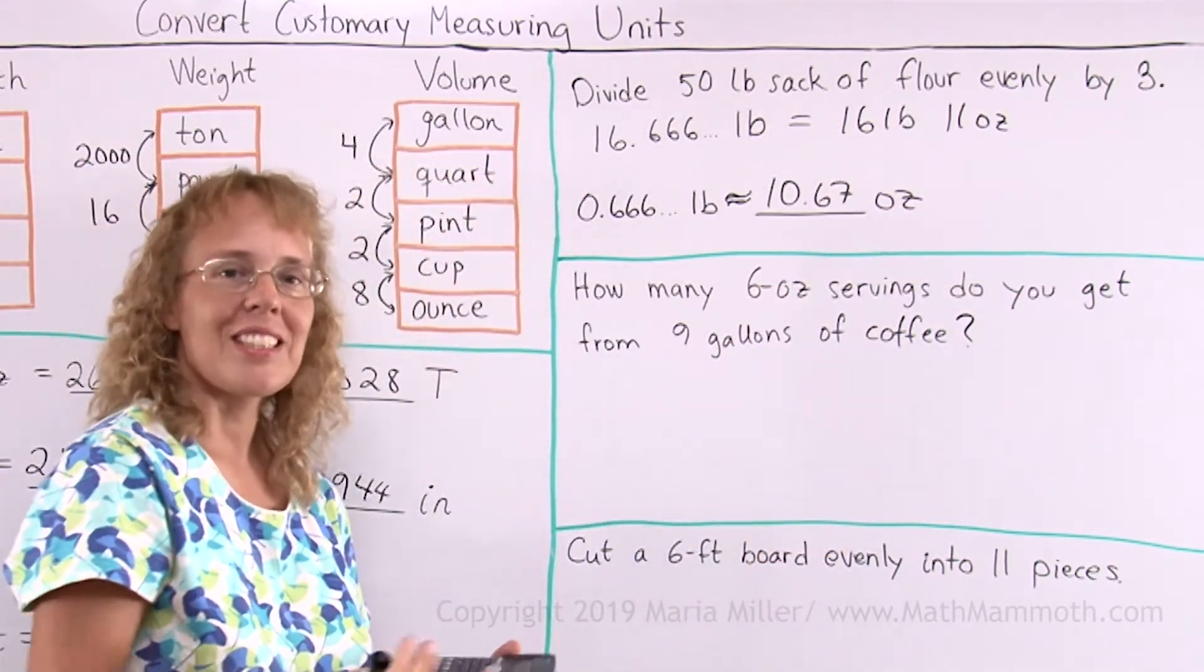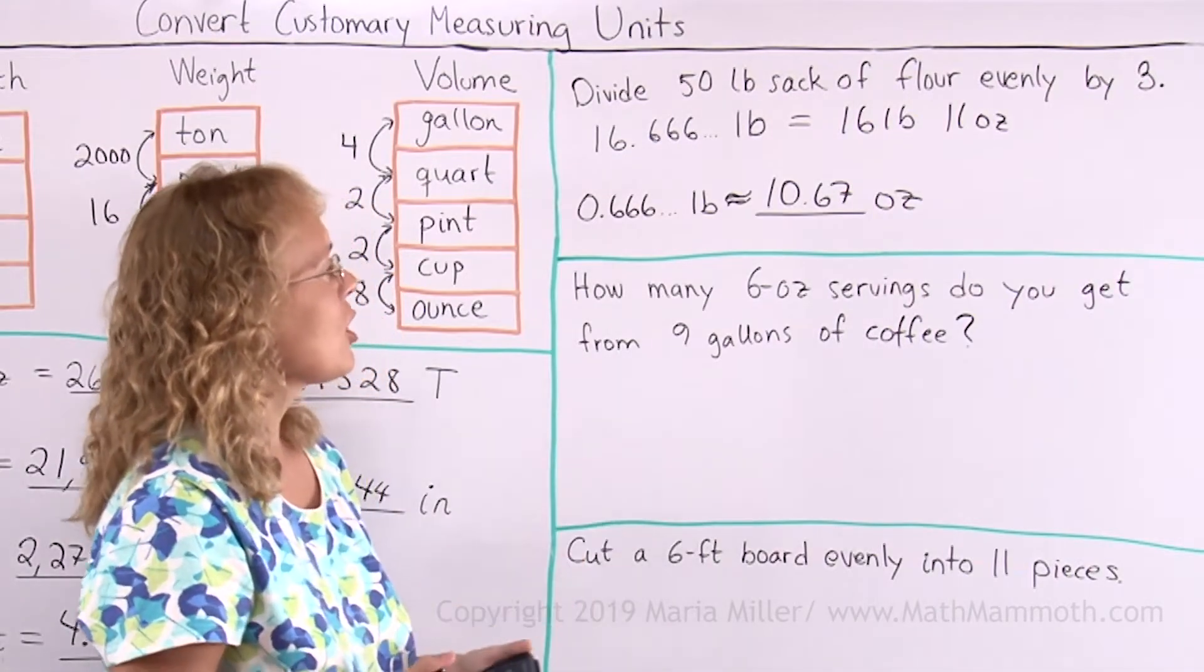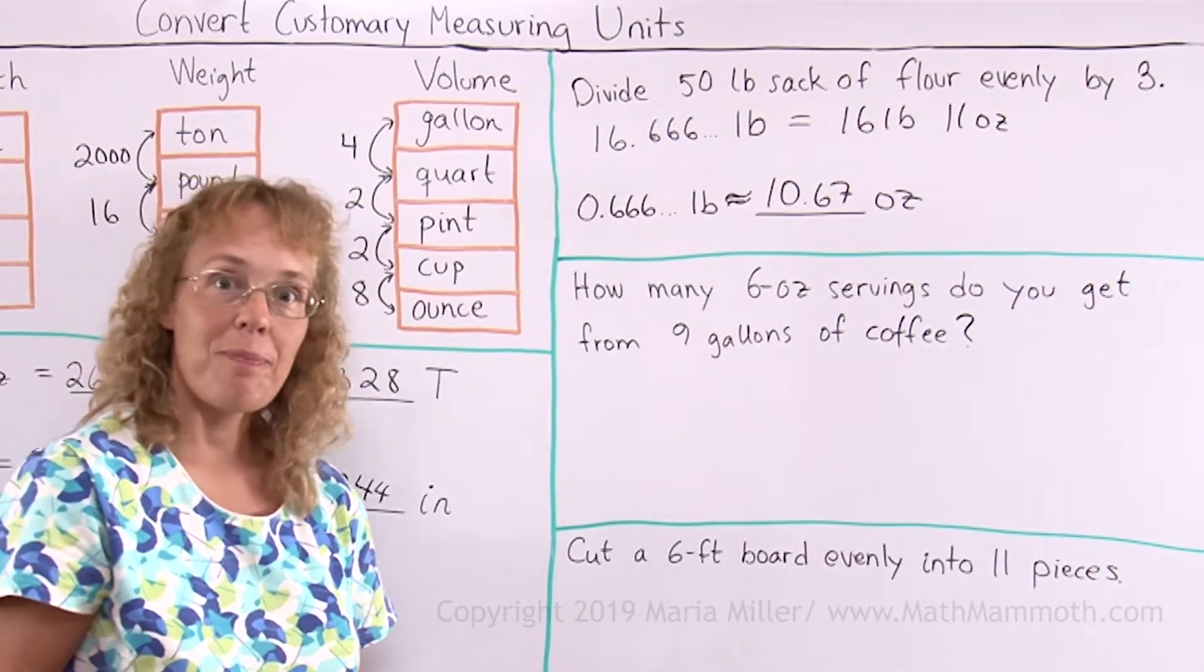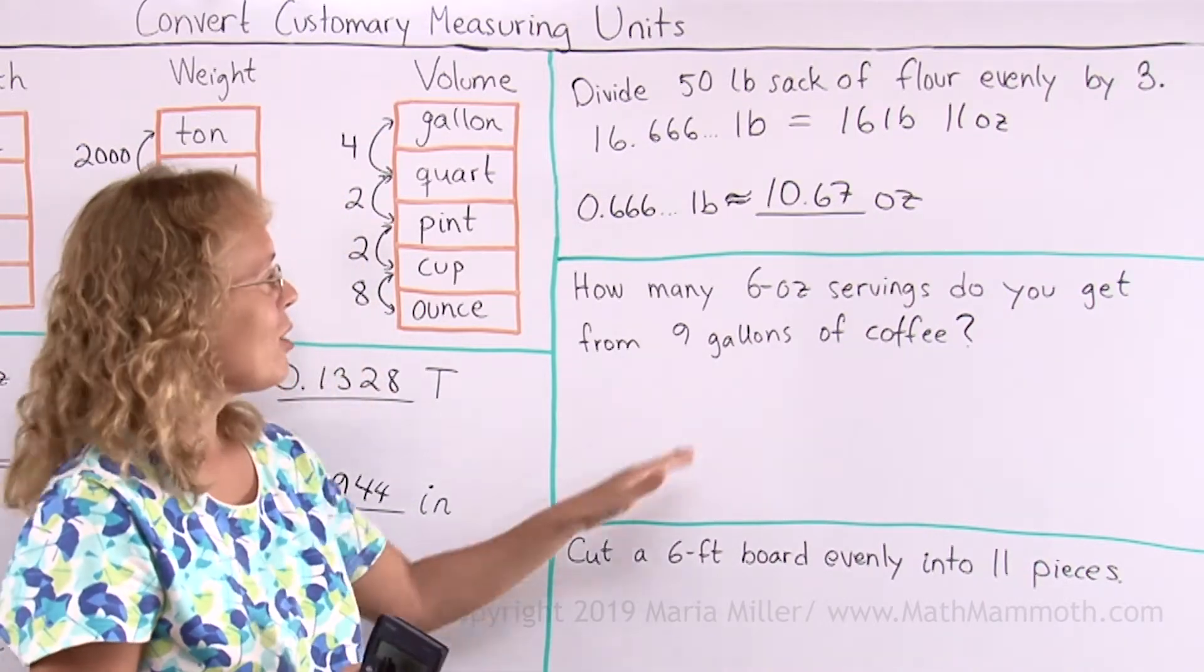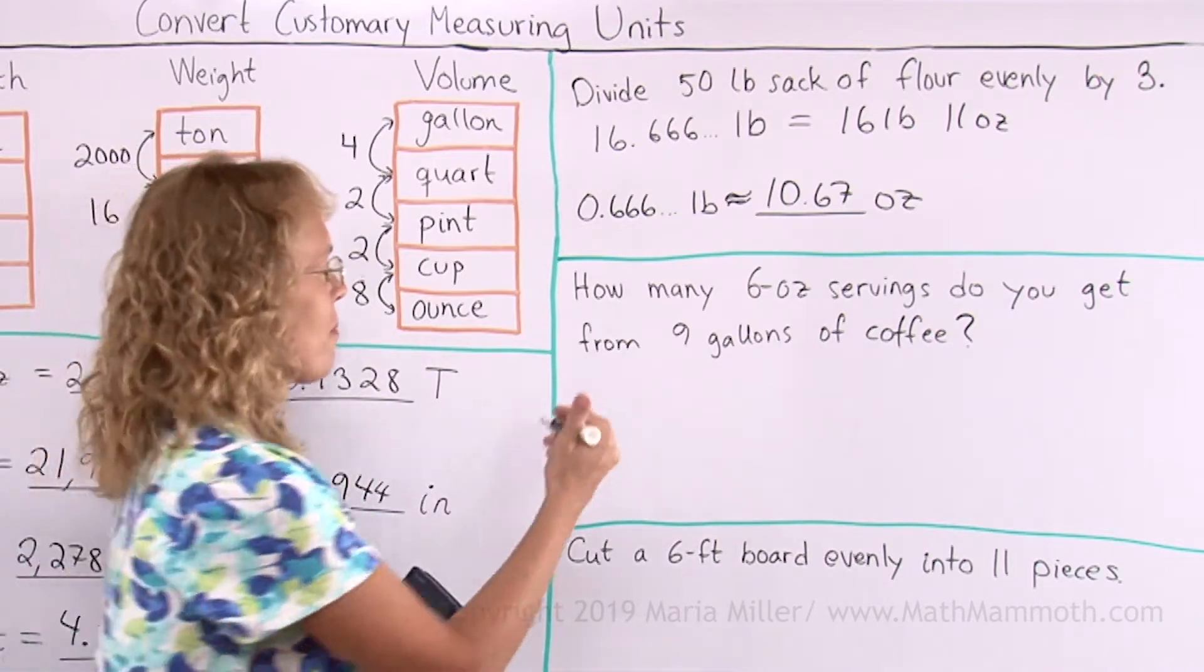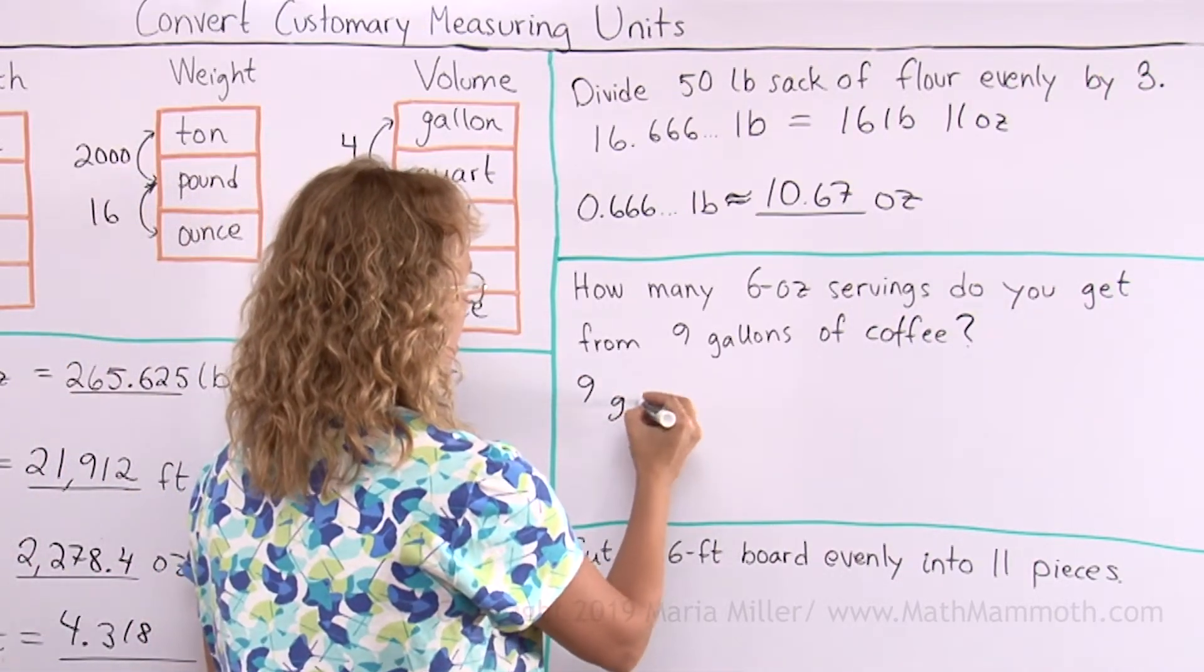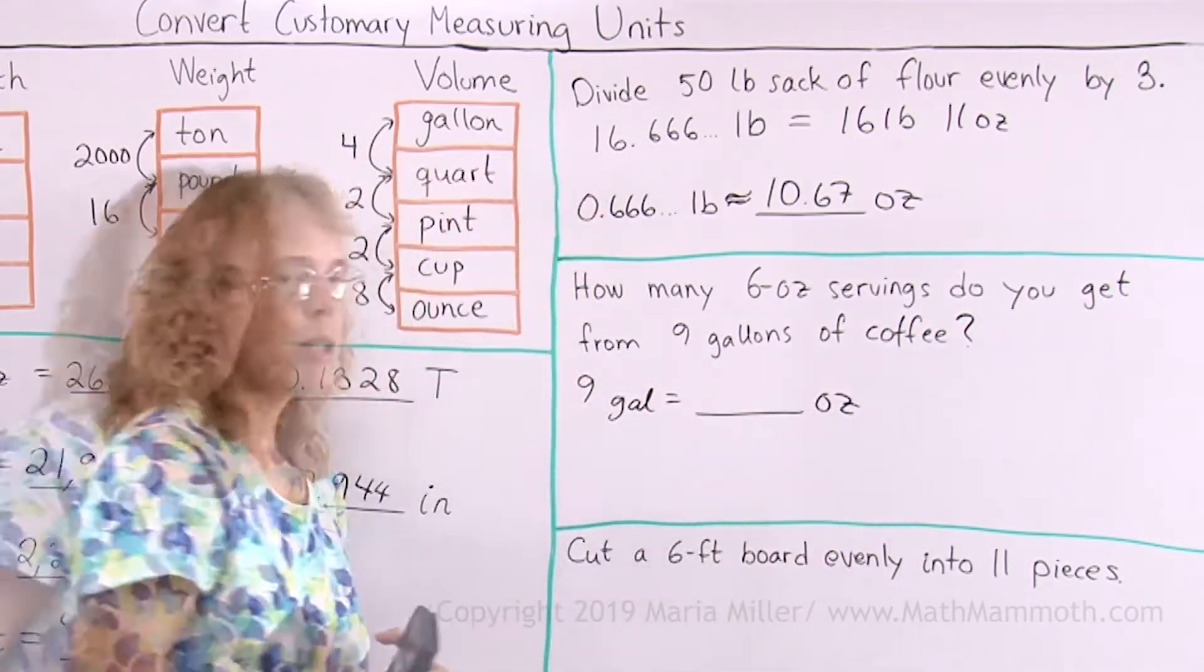You would measure your flour to be 16 pounds, 11 ounces. How many six ounce servings do you get from nine gallons of coffee? This is a simple problem. We need to just change these nine gallons to so many ounces, first of all. Nine gallons is how many ounces?